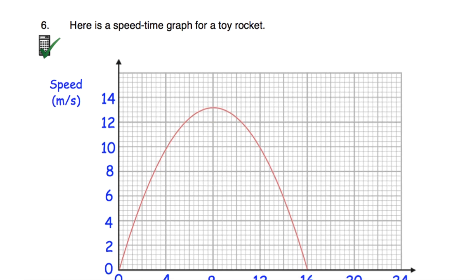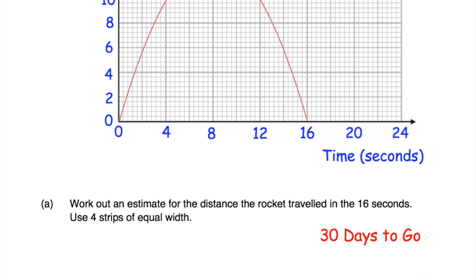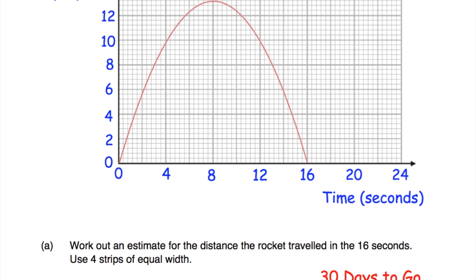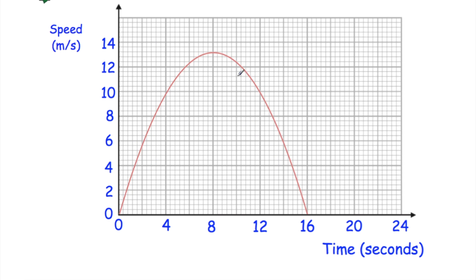Question number six: we've got a speed-time graph for a toy rocket. It starts at zero speed at zero seconds, speed increases, then decreases again. Part A asks for the total distance travelled in 16 seconds using four strips of equal width. To find the area under the graph, divide 16 by 4 to get 4-second strips, draw lines at 4, 8, and 12 seconds, forming a triangle, trapezium, trapezium, and triangle. Find each area, add them up — that total is your estimate for distance, since area under a speed-time graph equals distance. For part B, consider whether your shapes sit below or above the actual curve to decide if it's an underestimate or overestimate.